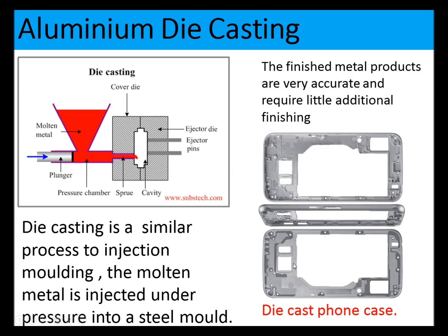Aluminium die casting is a similar process to injection molding. Molten metal is injected under pressure into a steel mold. Instead of a screw, a plunger pushes the molten metal into the mold, where it cools and is ejected. Aluminium or aluminium alloys are used to make die cast phone cases.